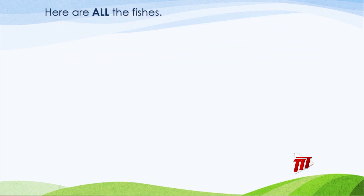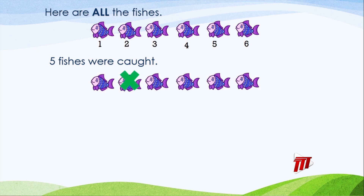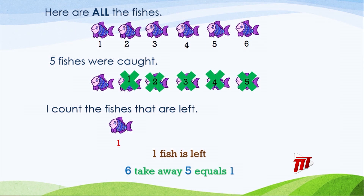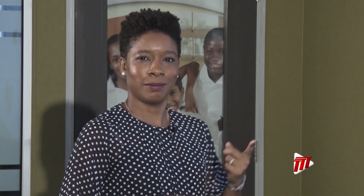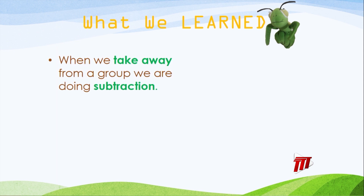Here are all the fishes — one, two, three, four, five, six. Five fishes were caught — one, two, three, four, five. I count the fishes that are left. Only one fish is left. Six take away five equals one.